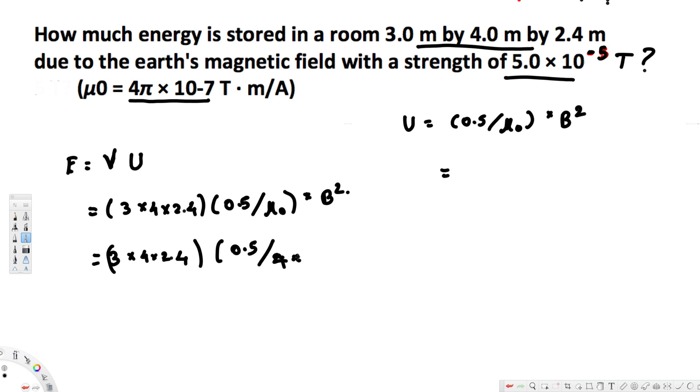And the magnetic field strength is 5 times 10 to the power of minus 5. 5 times 10 to the power of minus 5 squared.